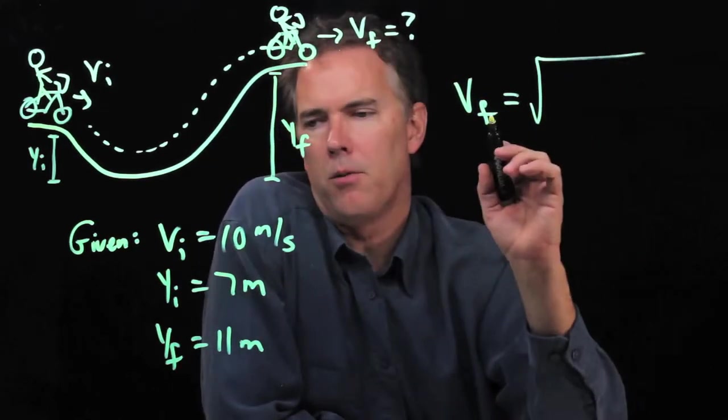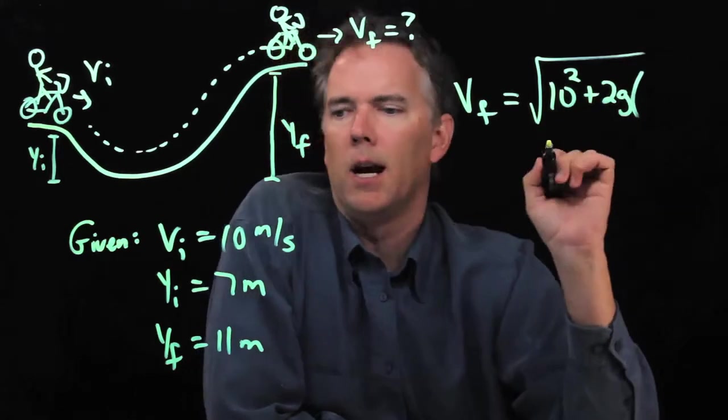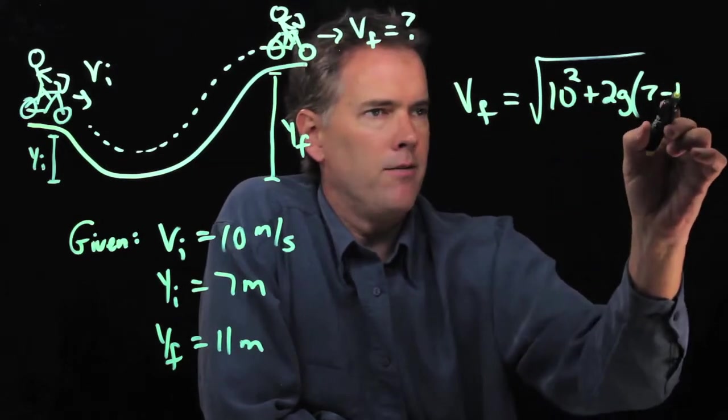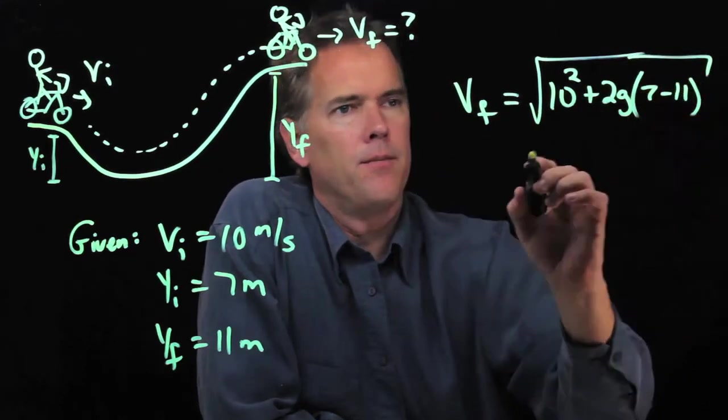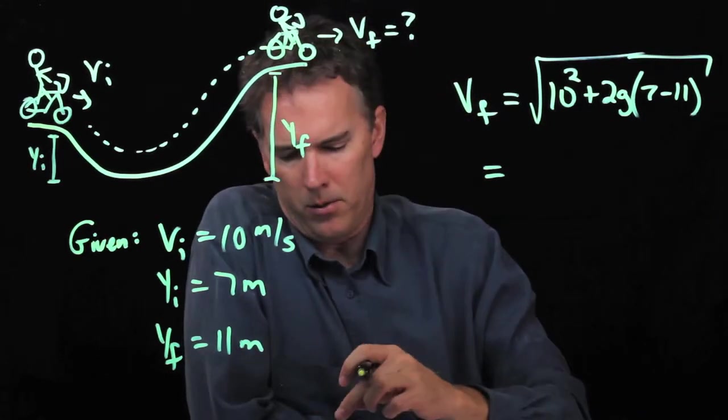We have the square root of Vi squared. Vi is 10, and then we had 2g times y initial, which is 7, minus y final, which is 11. We know that g is 9.8. We can plug all these numbers in and see what we get.